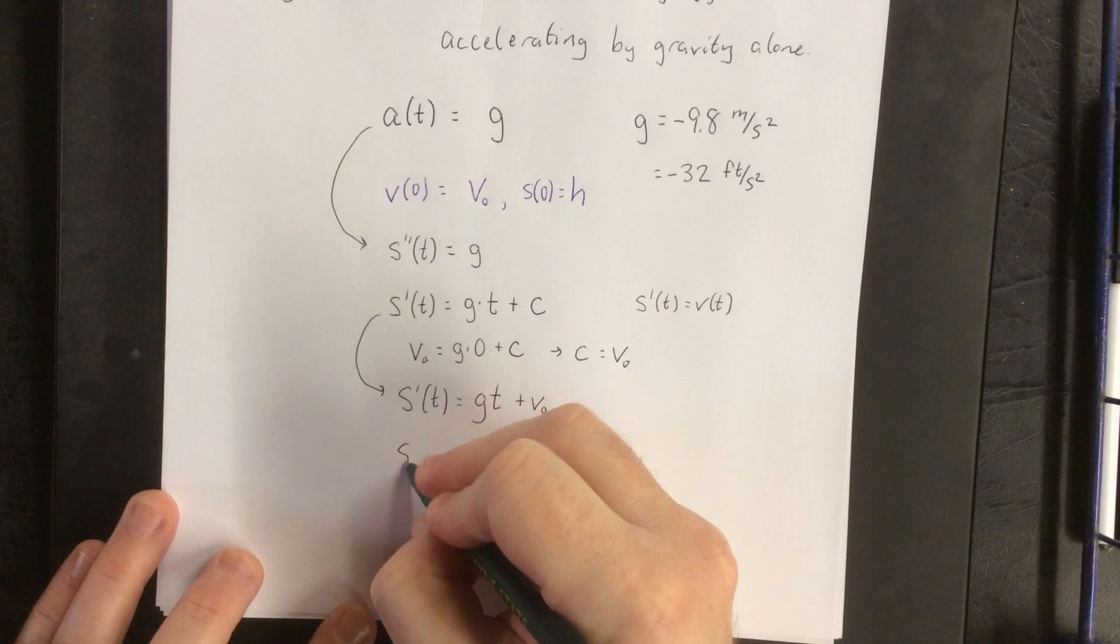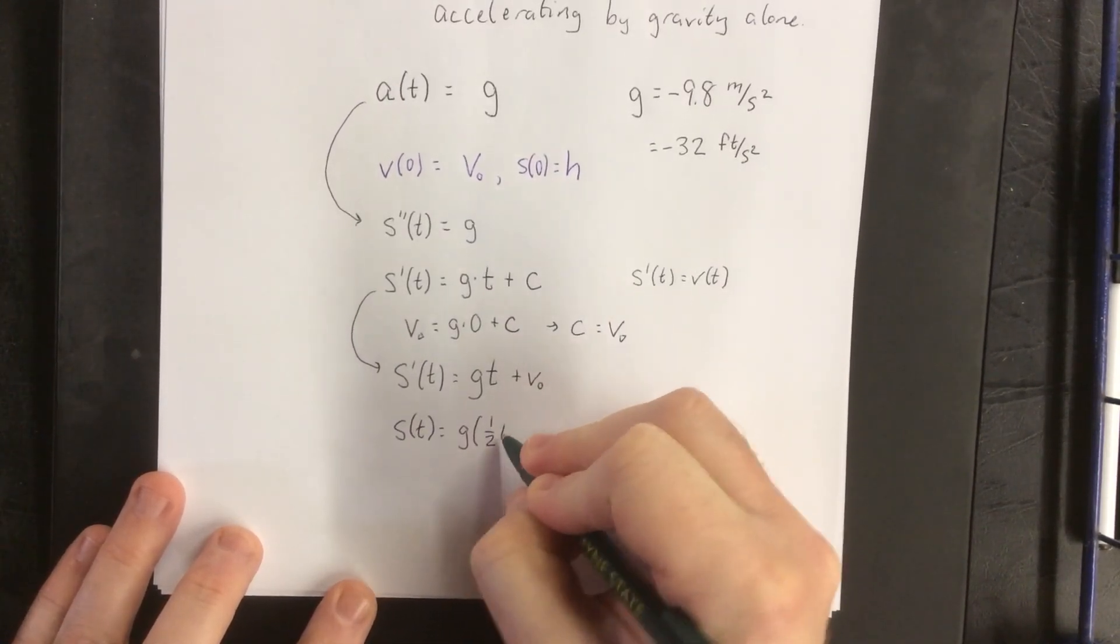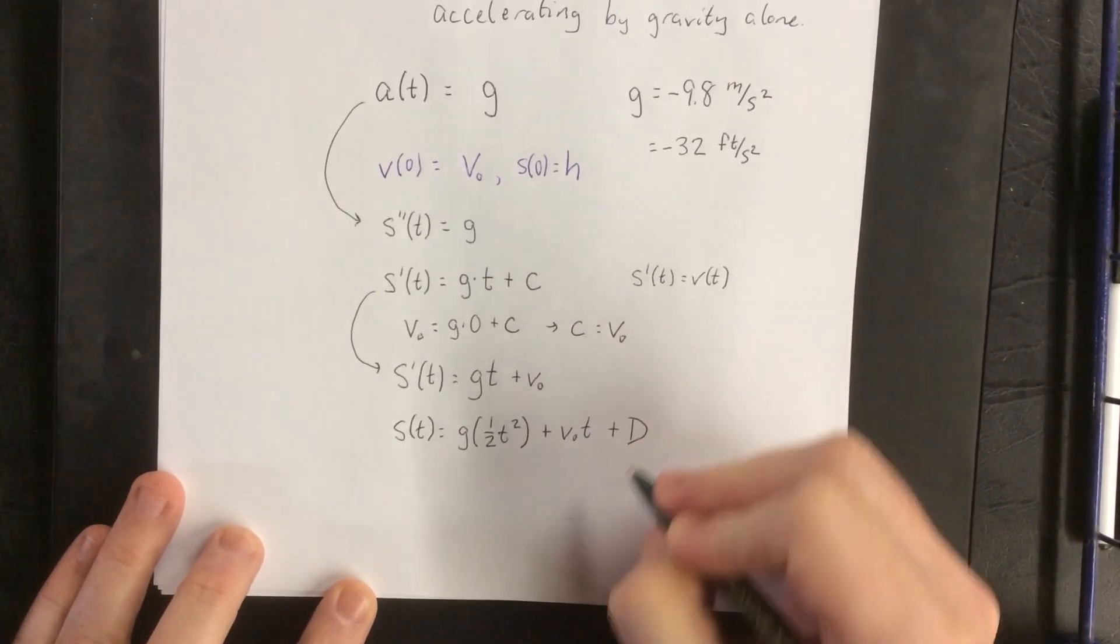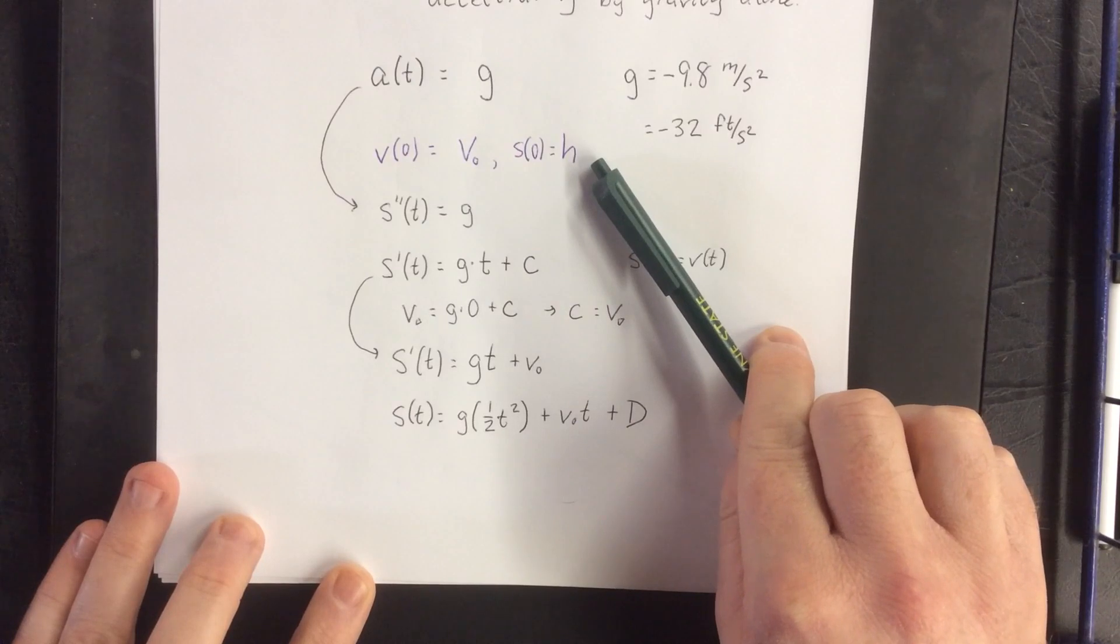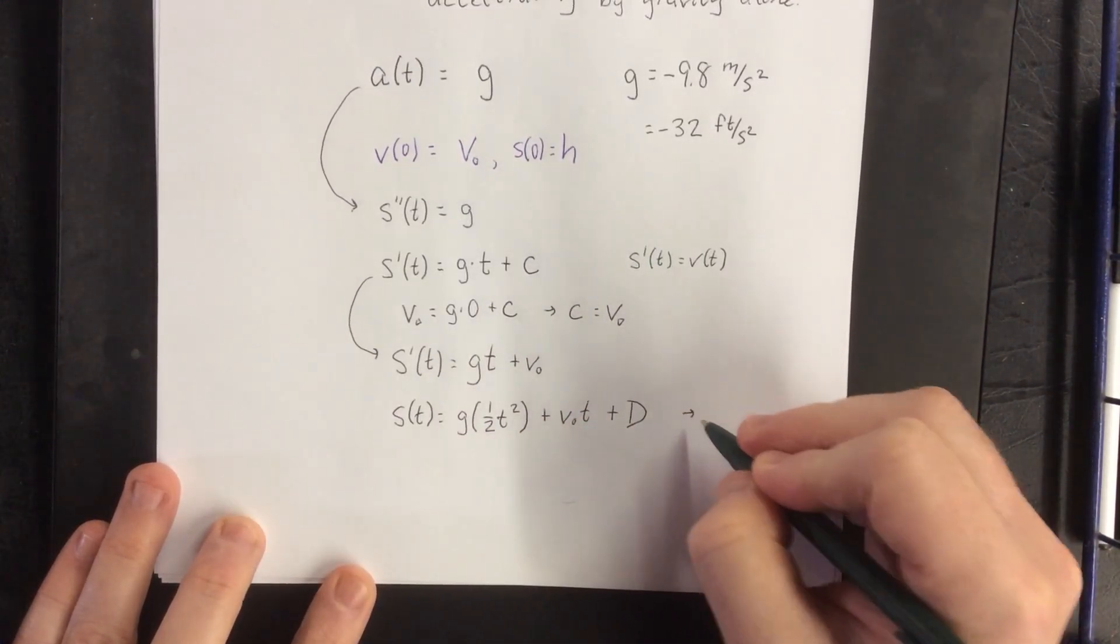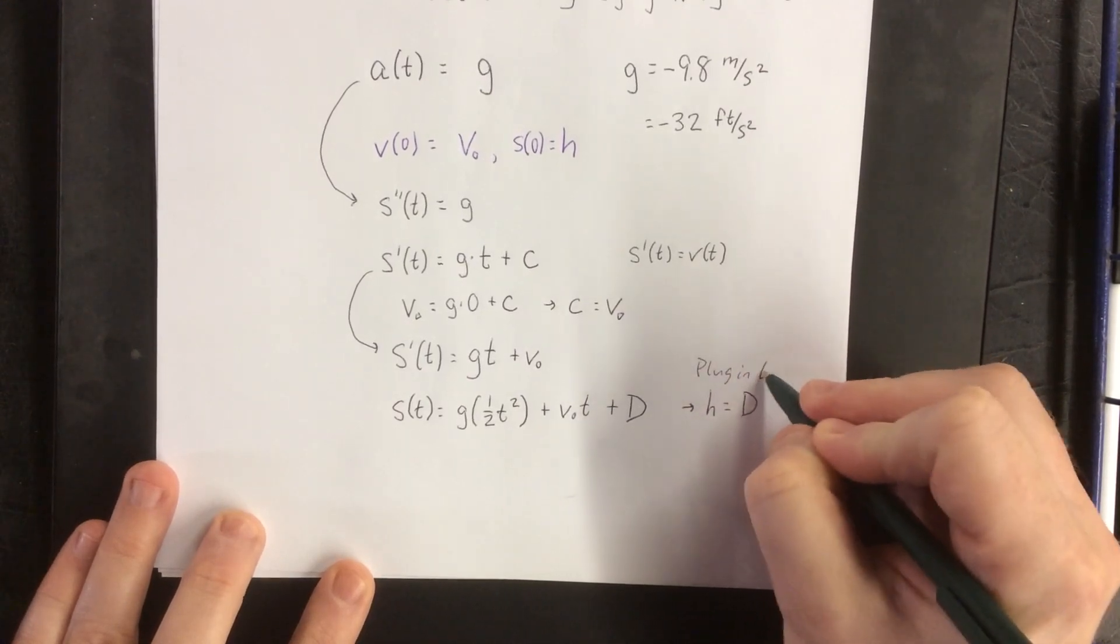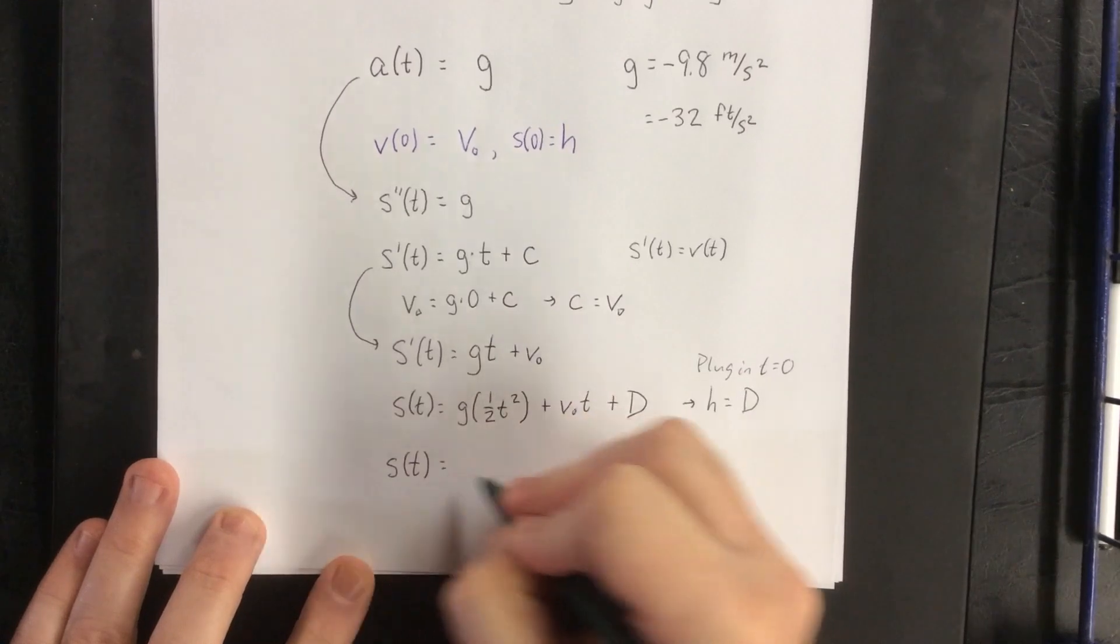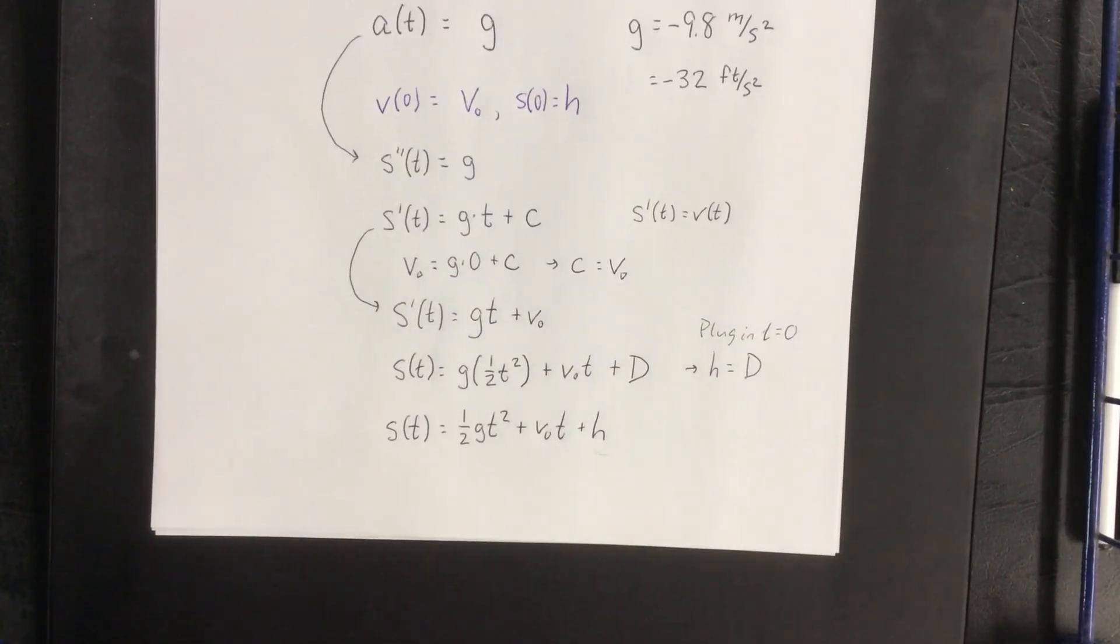Now one more antiderivative will get us back to our position function. The antiderivative of a constant times t would be that constant times, according to the power rule, one-half t squared. v naught is whatever our initial velocity is, that is a constant. So we'll see a constant times t, and then another constant of anti-differentiation. Now we defined the initial position to be whatever the height is off the ground, and if we plug in t equals 0, we're going to get that that is our constant of anti-differentiation. So that's from plugging in t equals 0. This would be 0, this would be 0, this would be c, and this will be the height. So that lets us know that the position of an object vertically after t seconds is going to be one-half times g times t squared plus v naught times t plus whatever the initial height happens to be.